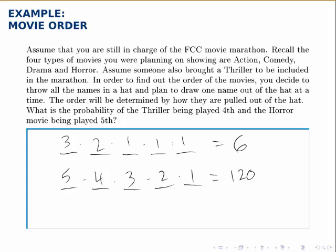Then of course the probability that this scenario happens is the number of ways that this scenario happens divided by the total number of possibilities. So if we divide six by 120, that's the probability. And of course we can simplify that fraction down to one over 20 or write it as a decimal which is 0.05. So there's a five percent chance that if we randomly organize the movies, the thriller will end up in the fourth slot and the horror movie will end up in the fifth slot.